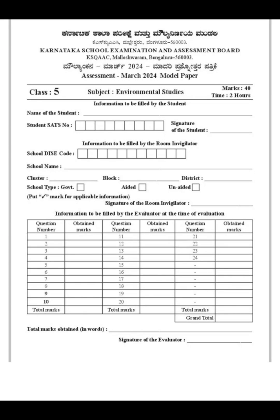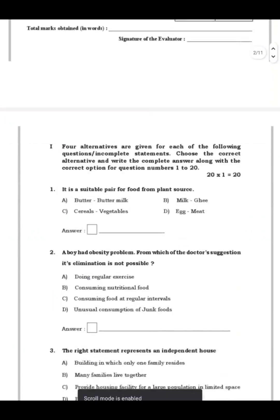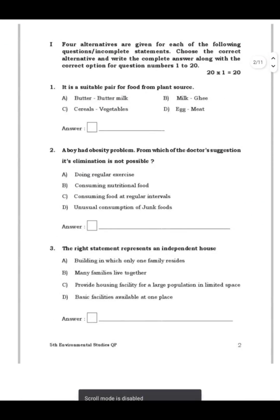This is how the question paper looks — your front page. Here you have to fill in all the details. For the first section, four alternatives are given for each question. You have to choose the correct alternative and write the complete answer along with the correct option. Questions 1 to 12 are MCQs — 12 questions total worth 12 marks.